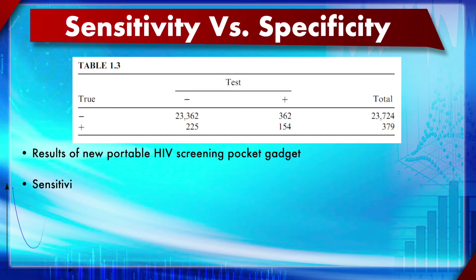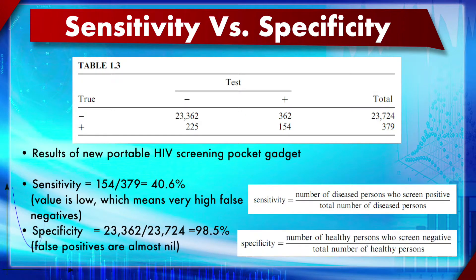Sensitivity and specificity can be demonstrated with a simple HIV testing kit example using observed empirical frequencies. To calculate sensitivity, use the second row of the table; specificity relates to the first row. Simply divide the relevant number by the row total to calculate each value - sensitivity and specificity of the dataset.